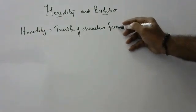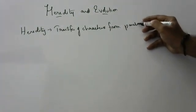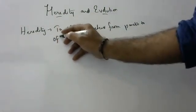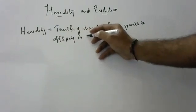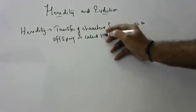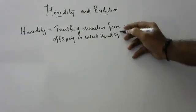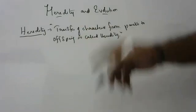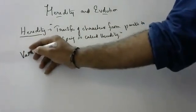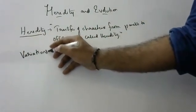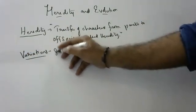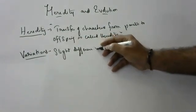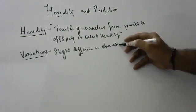Transfer of characters from parents to offspring is called Heredity. So whenever you study about Heredity, you should also study about Variations. Variations are slight differences in characters between parents and offspring.